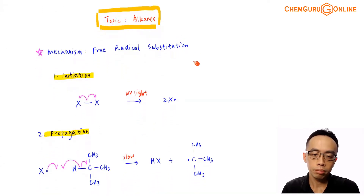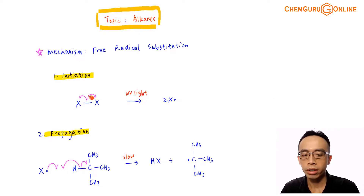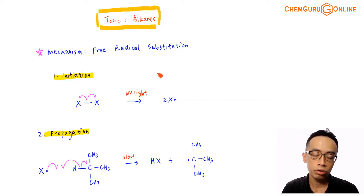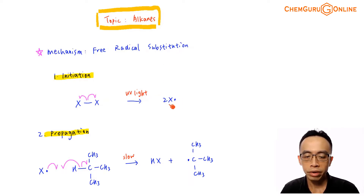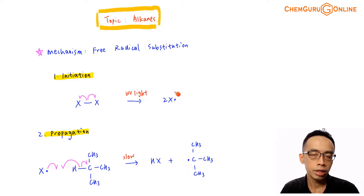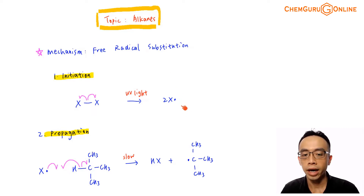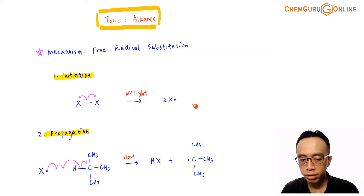Free radical substitution for alkanes is straightforward. The first step is the initiation step, where the X-X bond breaks homolytically in the presence of UV light. UV light is an energy source — it breaks the X-X bond equally, forming two halogen radicals. A radical is neutral but has an odd number of electrons, making it very reactive. This kick-starts the reaction, which is why we call it the initiation step.